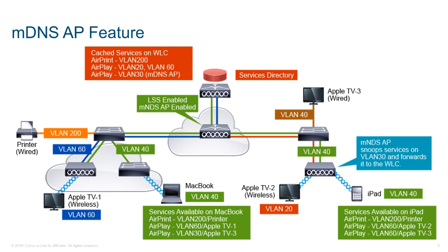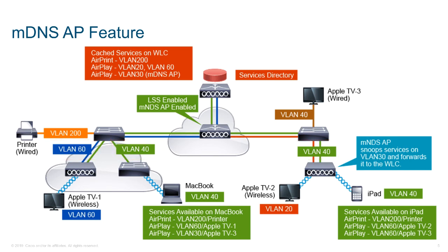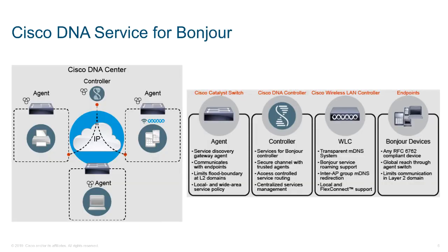The multicast DNS AP feature allows the wireless LAN controller to have visibility of the wired service providers that are on the VLAN. You must configure VLANs on all access points. VLAN visibility on the controller is achieved by the APs that forward the multicast DNS advertisements to the controller. There is a configurable knob provided on the controller to start or stop multicast DNS packet forwarding through the internal AP.